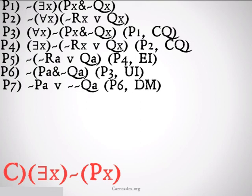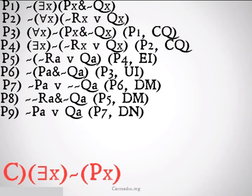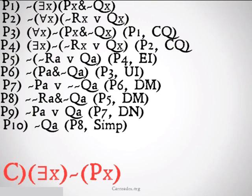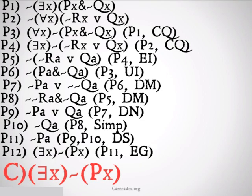We apply DeMorgan's Law to get: it's not the case that A is P, or it's not the case that A is Q. We apply DeMorgan's Law to the other premise to get: it's not the case that A is R, and it's not the case that A is Q. A double negation gives us: it's not the case that A is P or A is Q. Simplification gives us: it's not the case that A is Q. Taking those results via disjunctive syllogism gives us: it's not the case that A is P. Finally, existential generalization gives us: there exists some x such that it's not the case that x is P — which was the conclusion we were looking for.